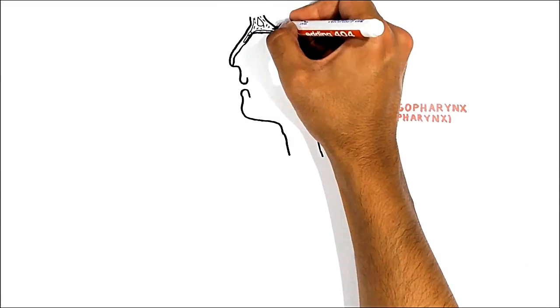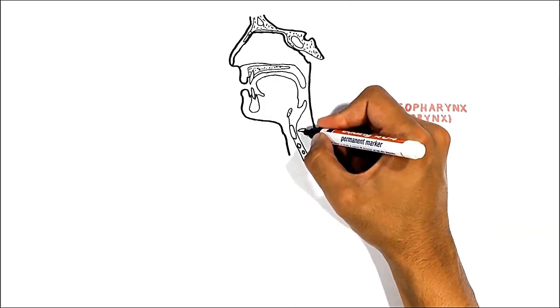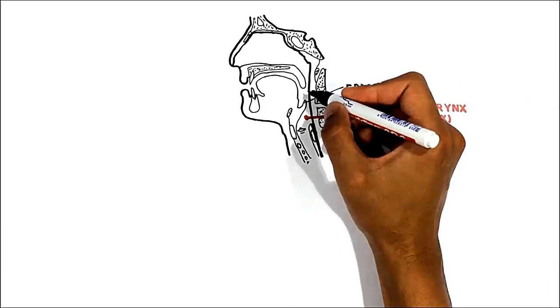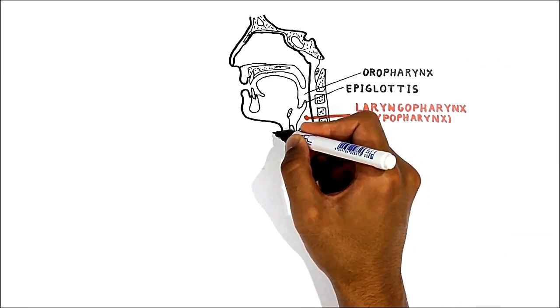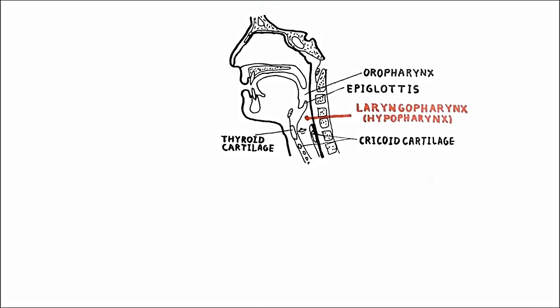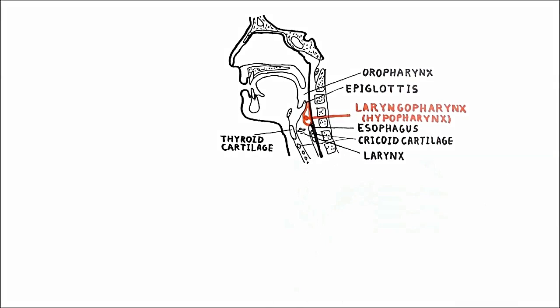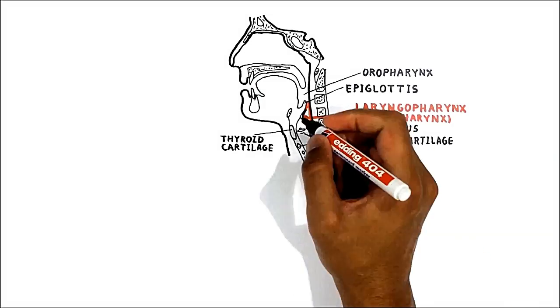The last part of the pharynx, the laryngopharynx, also known as the hypopharynx, is the caudal part of the pharynx. Its superior border is the epiglottis and the oropharynx, and its inferior border is the posterior surface of the cricoid cartilage of the larynx, at which point it becomes continuous with the esophagus. Surrounding structures include the epiglottis, thyroid and cricoid cartilage, larynx, and esophagus. The laryngopharynx communicates with the larynx via the laryngeal inlet.